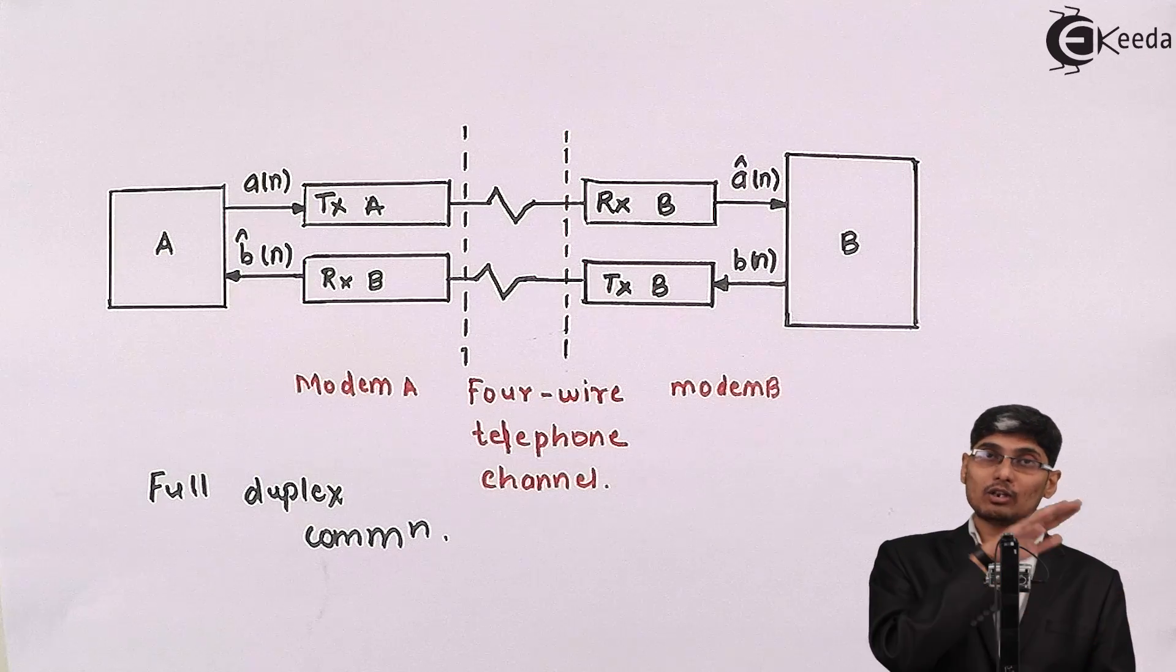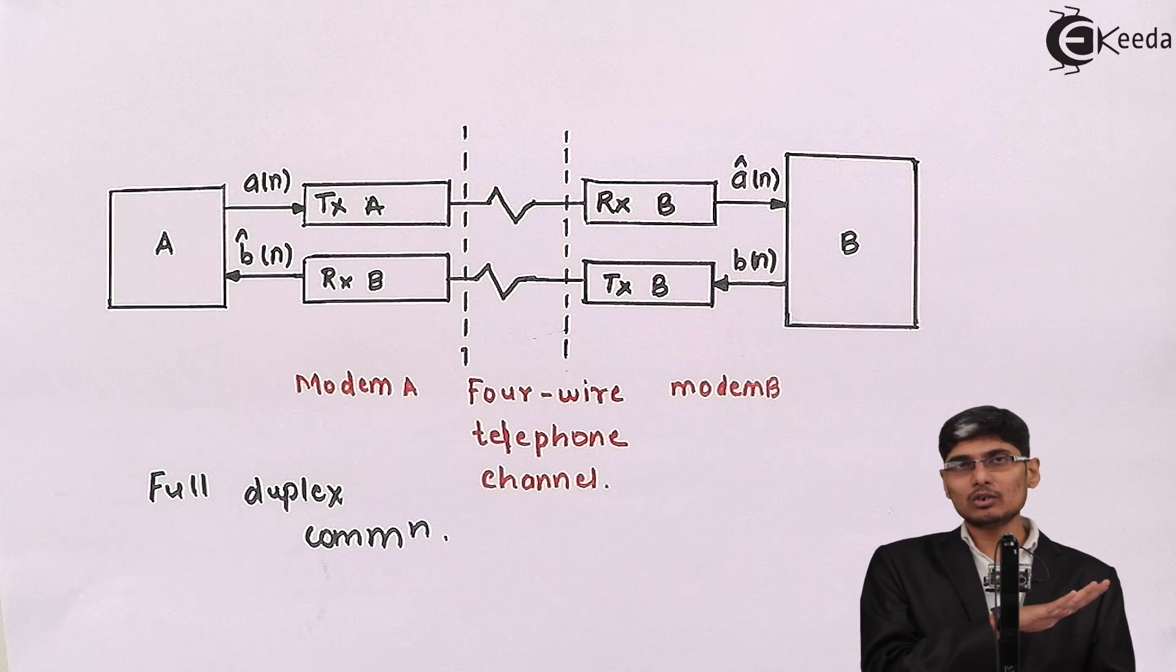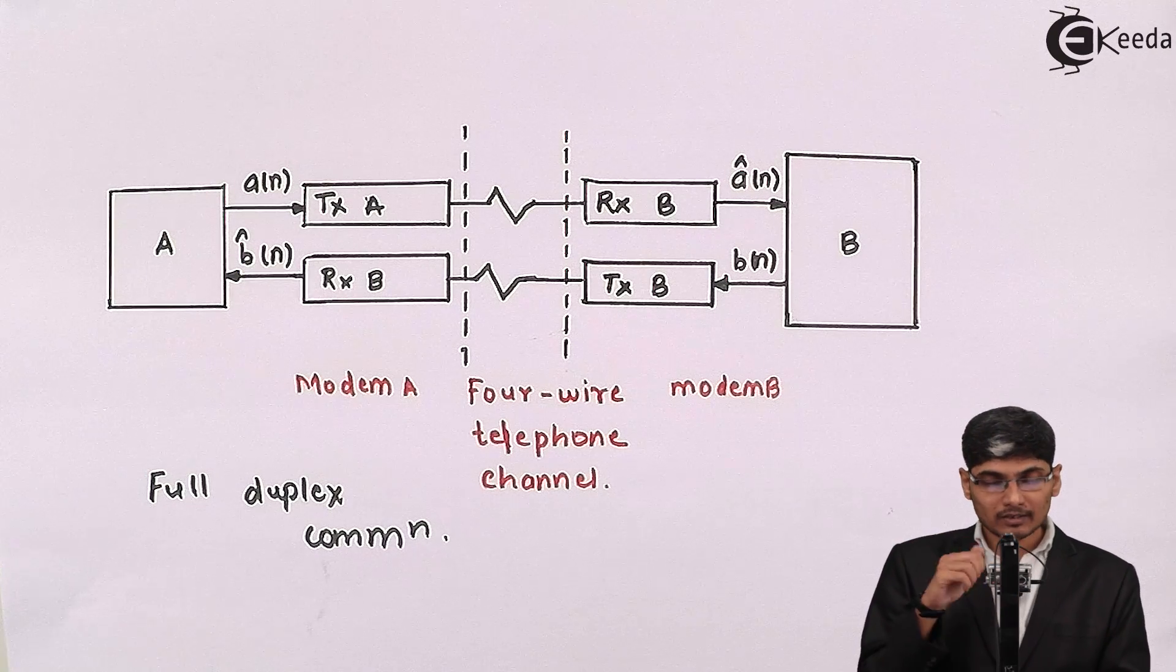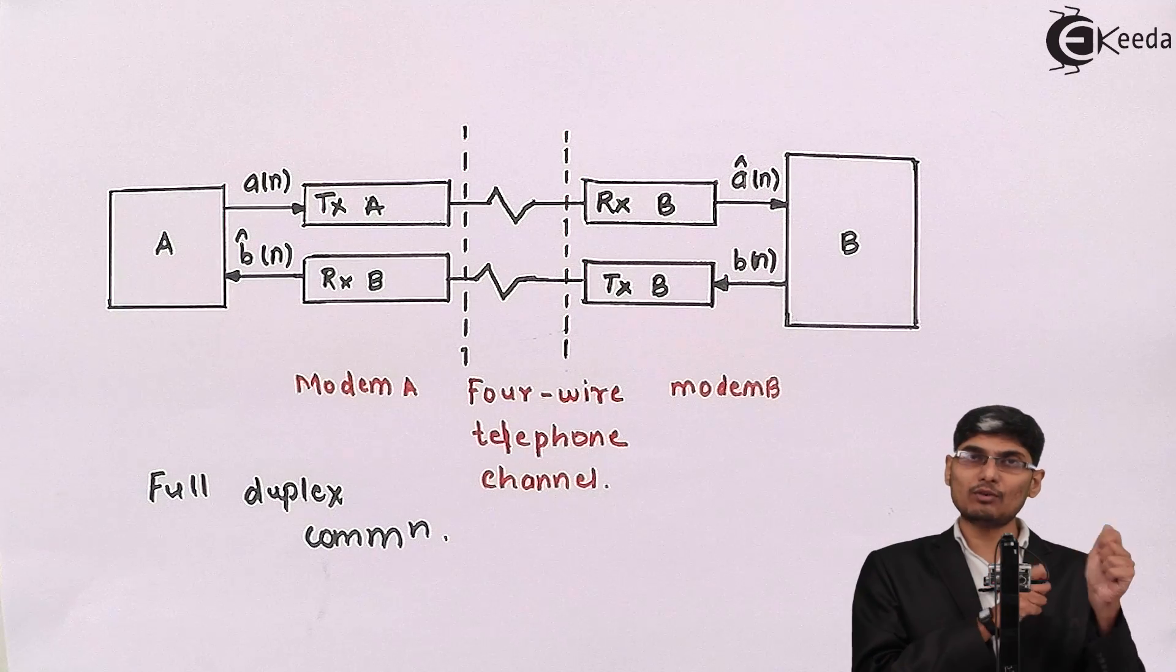There will be four total wires: one pair, that means two wires for transmission and two wires for reception. But when it comes to your telephone or the handset side, it is always two-wire. So we have two-wire to four-wire transition.